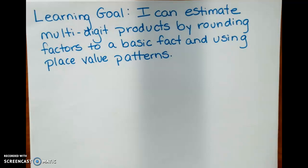What in the world does that mean? It means that we're going to take our multi-digit numbers and we're going to round them so that we can use our basic facts to find the products.